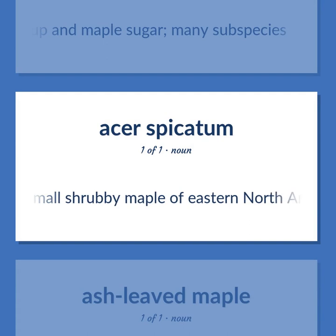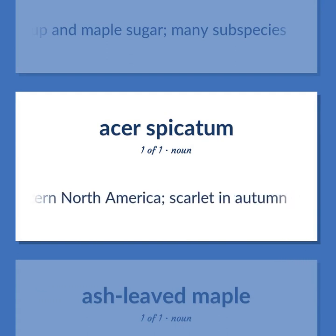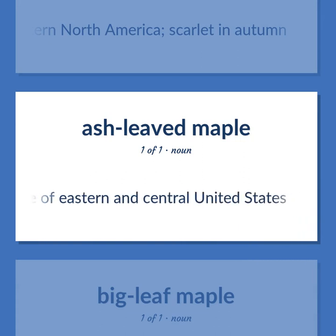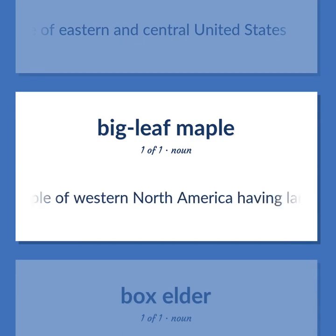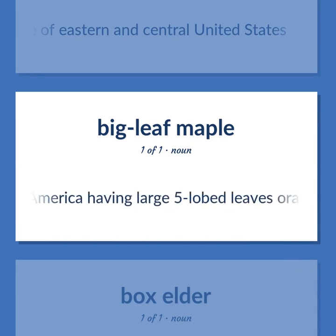Small shrubby maple of eastern North America, scarlet in autumn. Common shade tree of eastern and central United States. Maple of western North America having large five-lobed leaves orange in autumn.